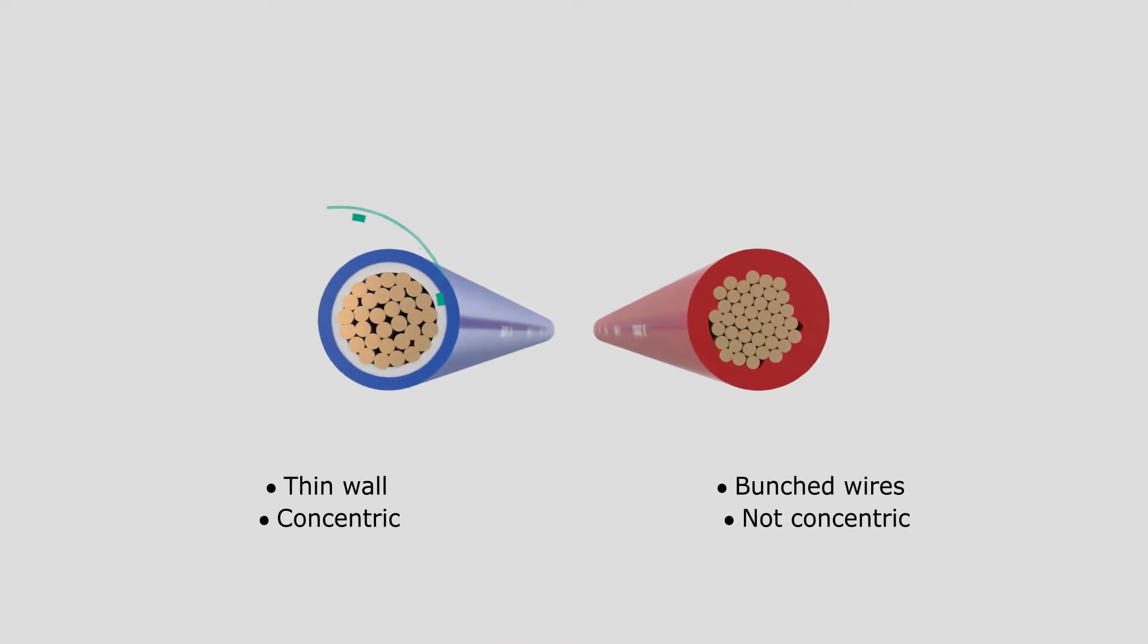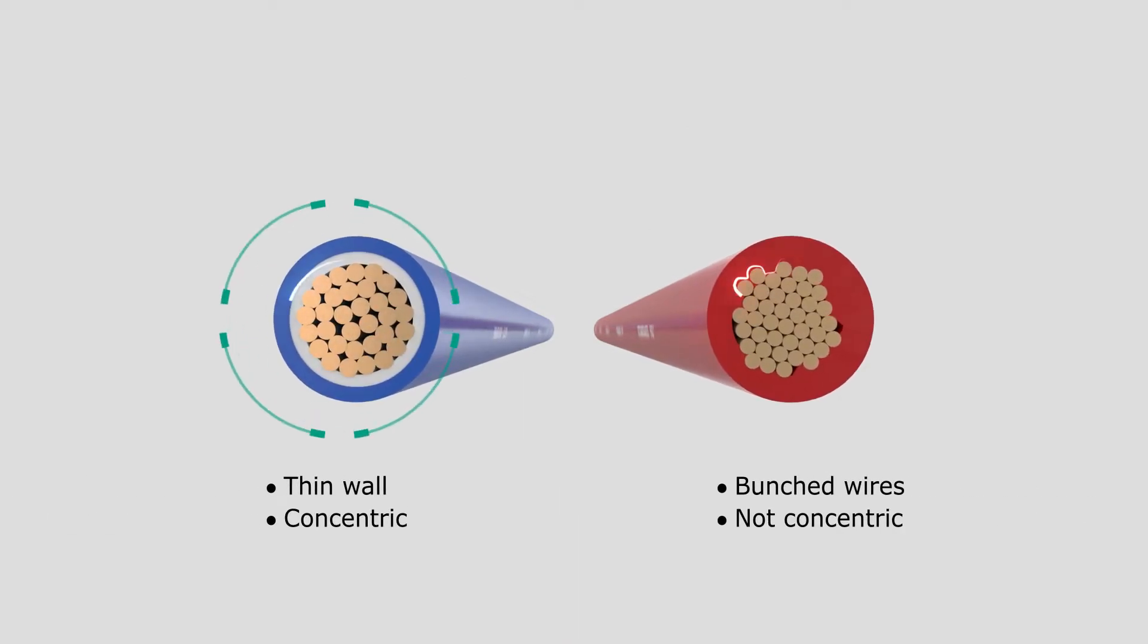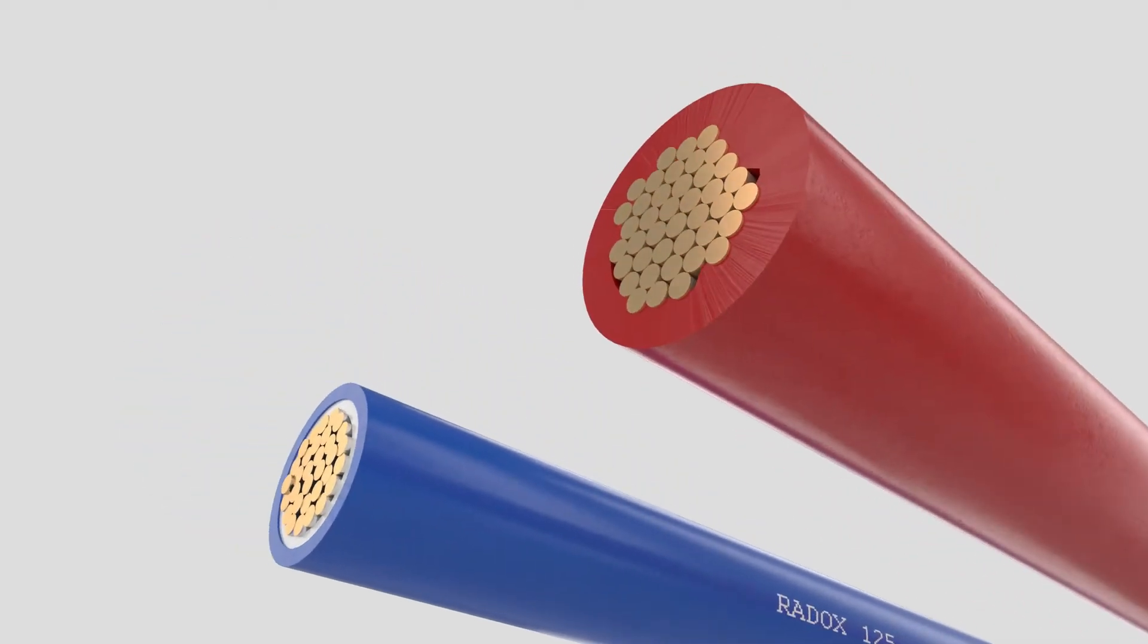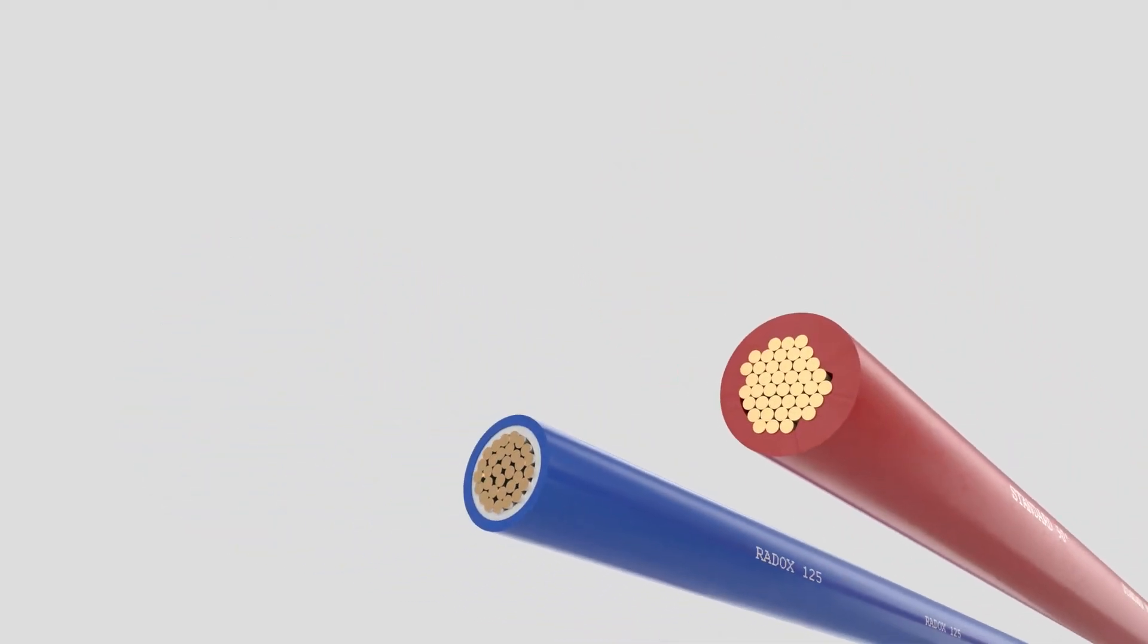The cable is designed with a thinner insulation wall and concentric conductor, making the stripping process much easier.